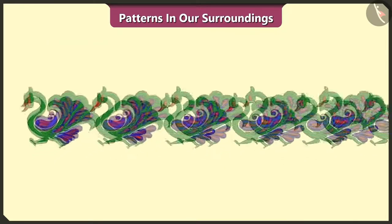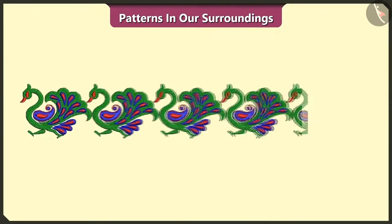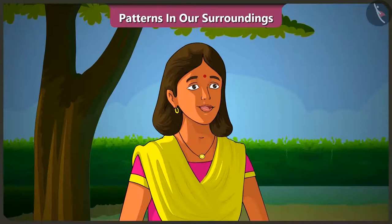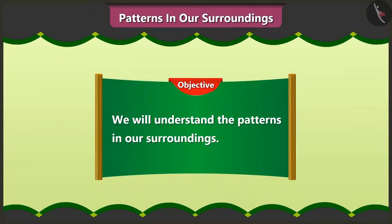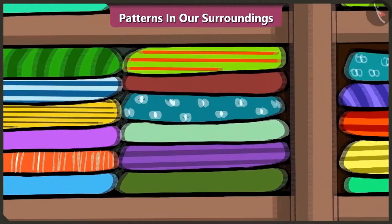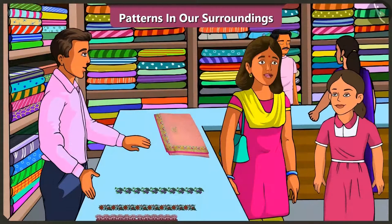Look, this lace has a pattern made of peacocks. Oh yes, here the peacock motif has been repeated again and again. Rightly said Vinny. Mummy, I want to know more about patterns. Okay Vinny, so today let's observe the patterns we see in our surroundings. Look Vinny, all the clothes here have some pattern on them. In all these clothes some shapes or designs have been repeated again and again.